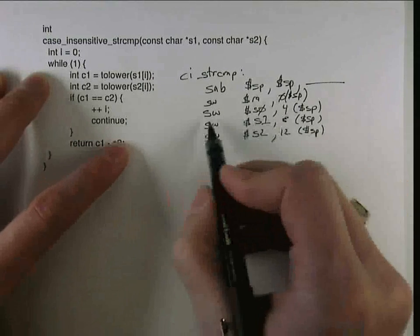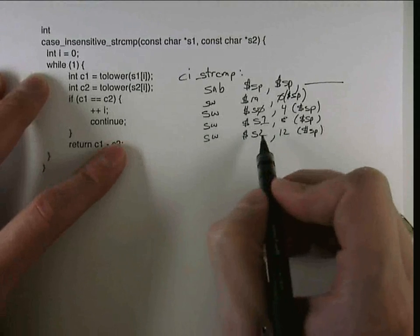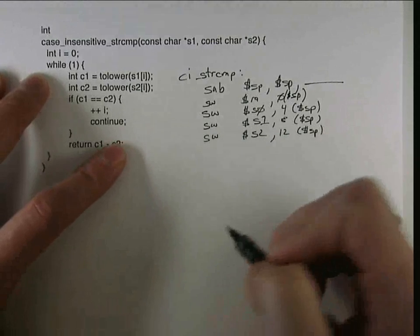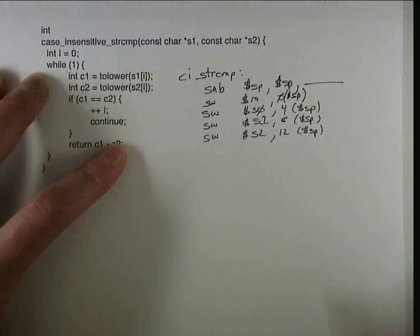So because they're callee saved, I need to save them before I use them, unlike the caller saved where I save them before I call a function.